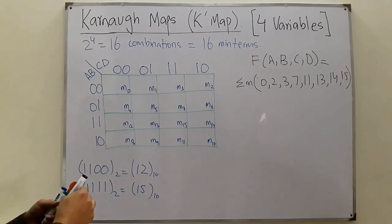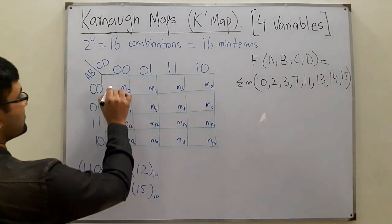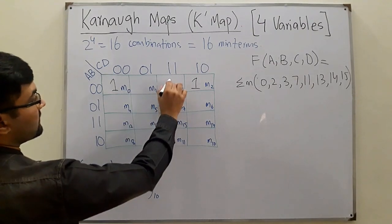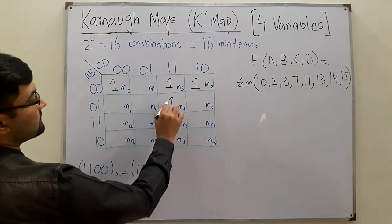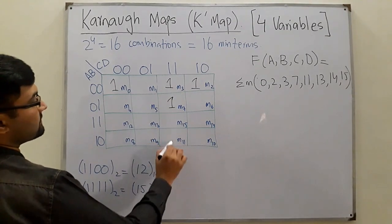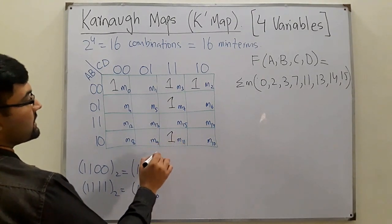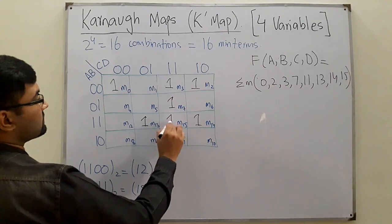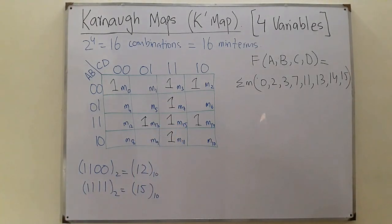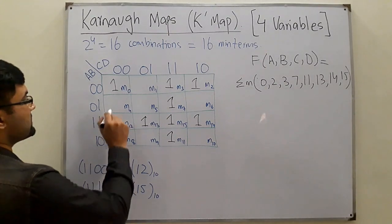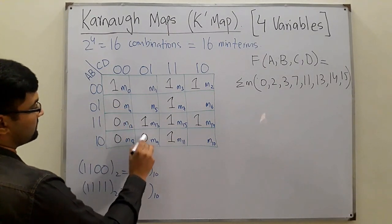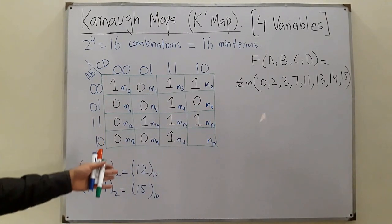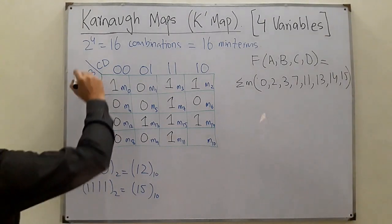Filling the map: m0 gets a 1, m2 gets a 1, m3 gets a 1. Four and five are not present, six is not present, m7 gets a 1. Then m11, m13, m14, and m15 get ones. The rest of the cells are zeros.